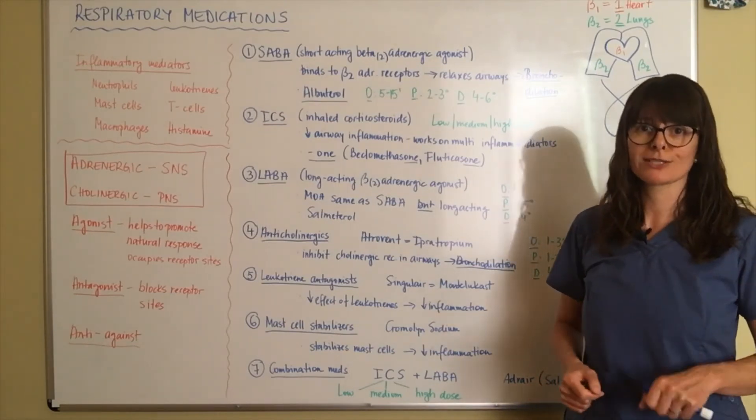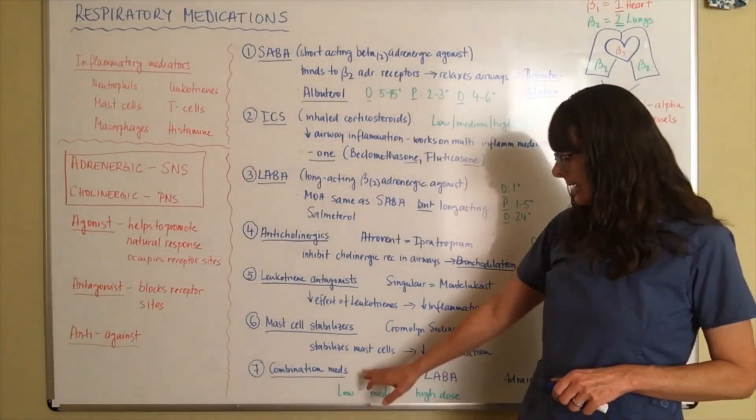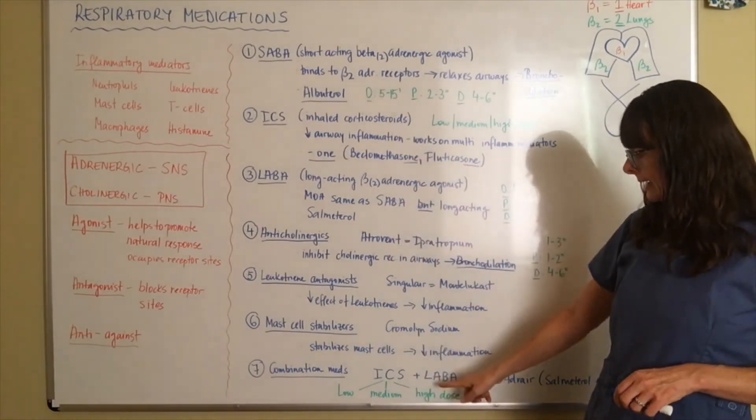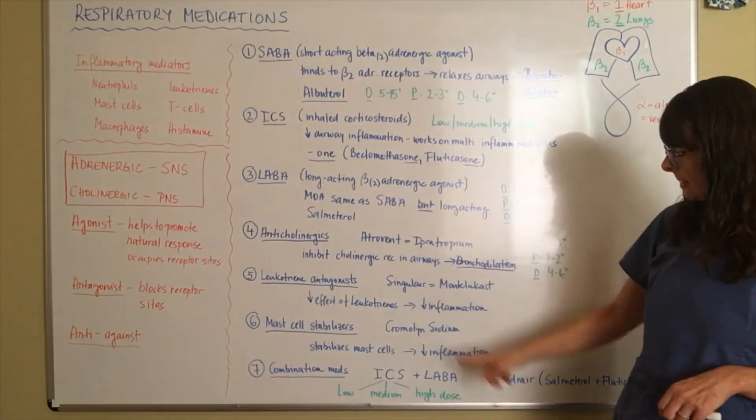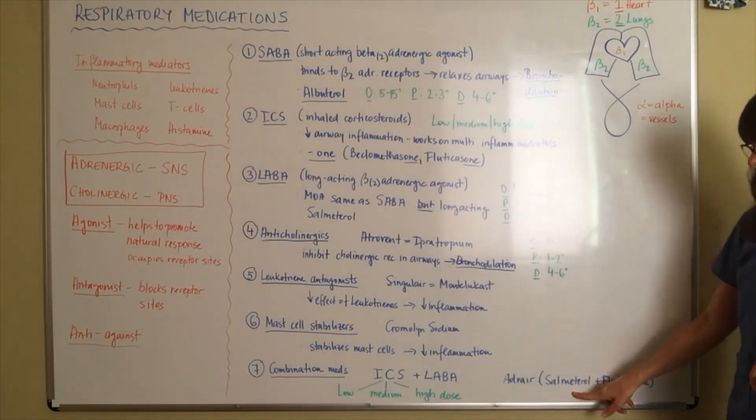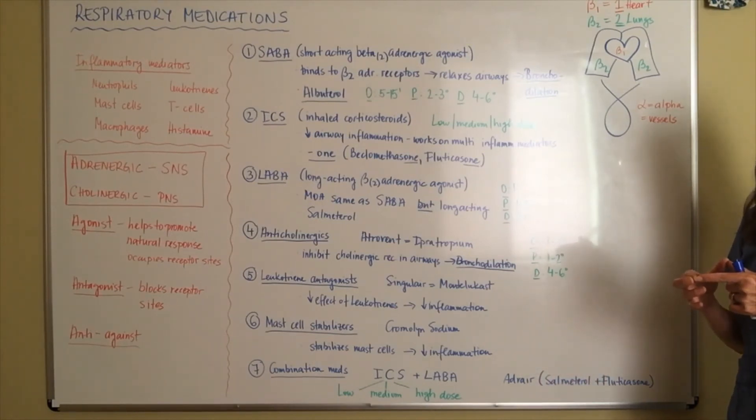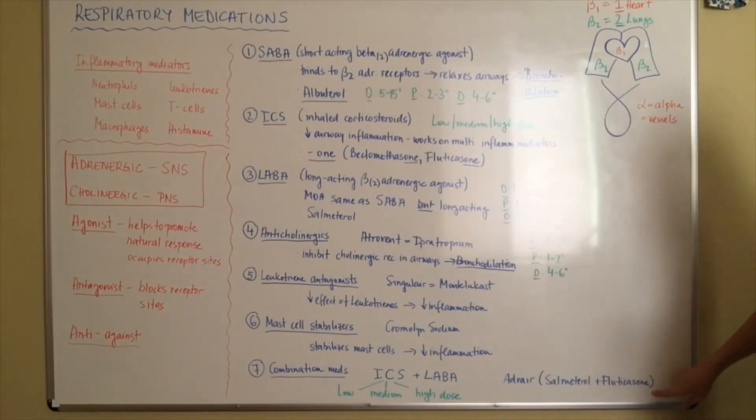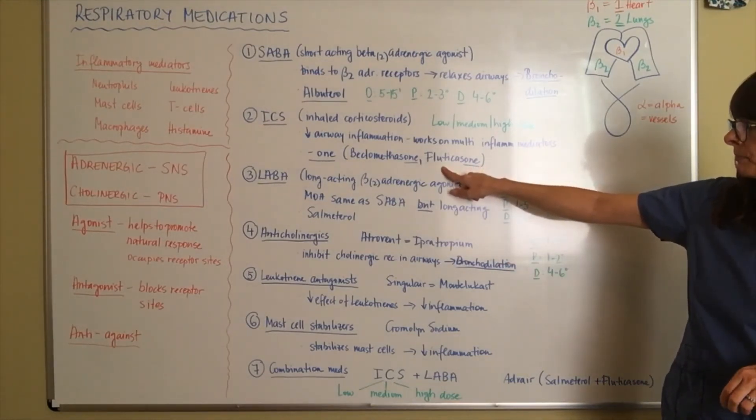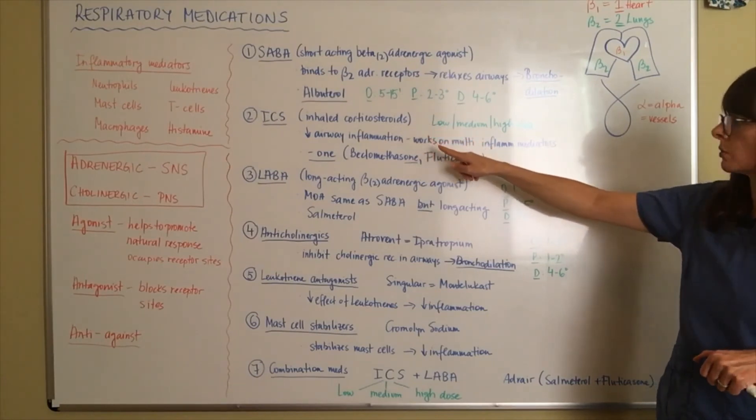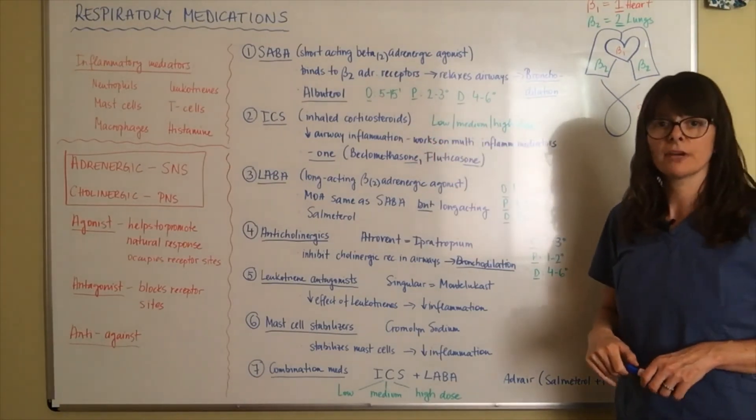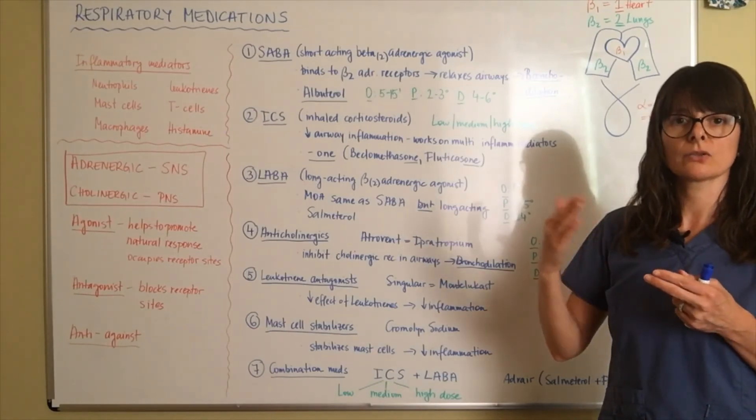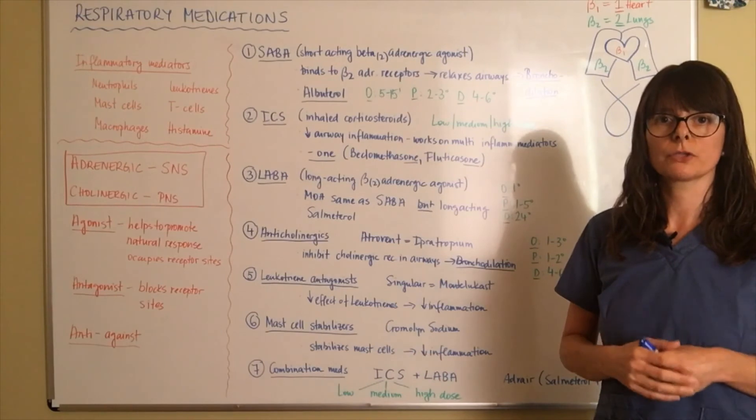And then in addition, as if this wasn't enough already, we have certain combination medications. And these combination medications usually consist of an ICS, an inhaled corticosteroid, and a LABA, a long acting beta adrenergic agonist. The most commonly used one is Advair. That's that purple discus that you might have seen in the clinical setting. And it consists of salmeterol, which is our LABA, and fluticasone, you know, our -ones are our inhaled corticosteroids. And then inhaled corticosteroids also come in low, medium or high doses. So depending on the severity of the patient's asthma, they'll be on the strength, basically, the more severe the asthma, the higher strength or the higher of a dose the patient will need.